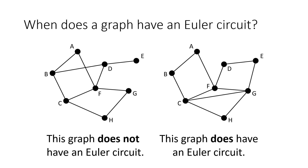So here we have two graphs. The graph on the left does not have an Euler circuit, but the graph on the right does have an Euler circuit. So we want to try to understand why — why does the graph on the left not have an Euler circuit and the graph on the right does?